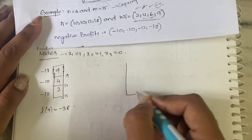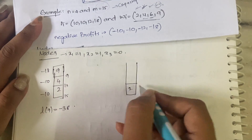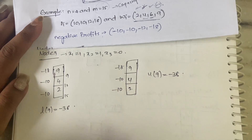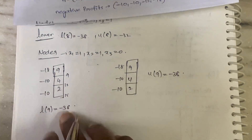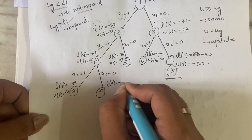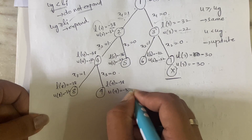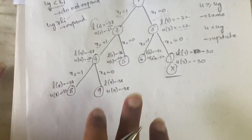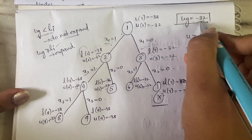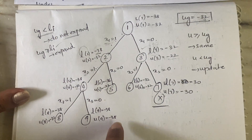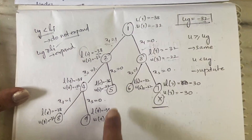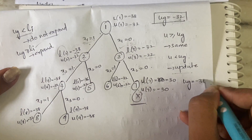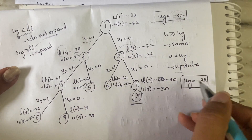For the upper bound of node 9 — since there are no fractions, it is the same: minus 10, minus 10, minus 18, so upper bound of node 9 is also minus 38. Both lower bound and upper bound of node 9 are minus 38. Now compare the upper bounds with the global upper bound: minus 38 is less than minus 32, so you have to update the global upper bound to minus 38.